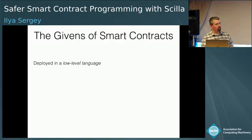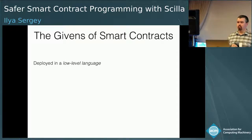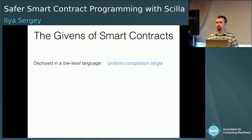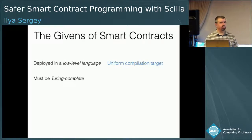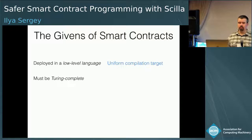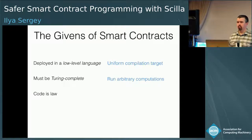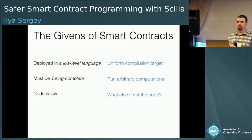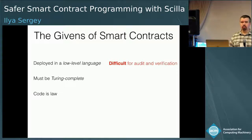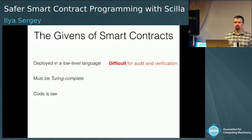Having been pioneered by Ethereum, smart contracts have been perceived with a number of givens that most of the community agrees on. First, smart contracts are deployed on the blockchain using a low-level language, because it's nice to have a uniform compilation target — you can write contracts in Solidity, Haskell, or Scala as long as you can compile to this low-level language. Second, since smart contracts are positioned as a general mechanism for replicated computations, it's better for them to be Turing-complete. Finally, the common opinion is that we should consider smart contracts as law, because otherwise there's no way to ensure the outcome of the computation.